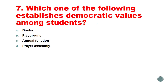Which one of the following establishes democratic values among students? The options are from books, from playground, from annual function, or from prayer assembly. When we talk about games and the playground, we develop democratic values — cooperation, acceptance of others, and the understanding that everyone has equal rights and is heard equally. So the most democratic values will be developed on the playground.